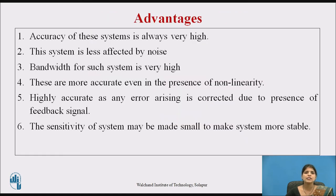The advantages of closed loop system are: first, accuracy of the system is always high because the controller modifies and manipulates the actuating signal such that the error in the system will be zero. Second, it is less affected by noise. Third, bandwidth is very high. Fourth, it is very accurate. Fifth, sensitivity of the system may be made small to make the system more stable. Sixth, the system senses environmental changes as well as internal disturbances and modifies the error accordingly.